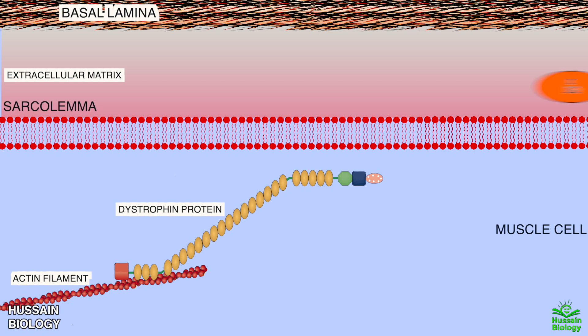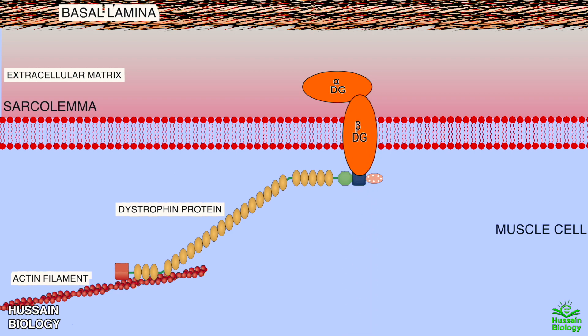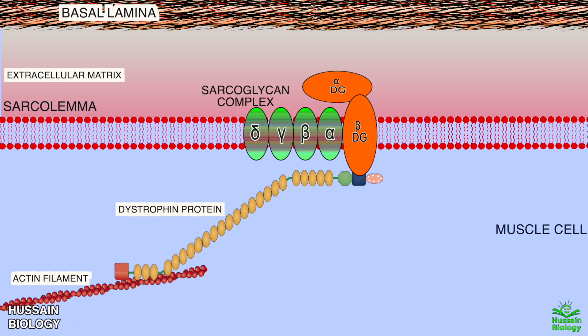At the sarcolemma we have different types of proteins assembling together. First we have alpha-dystroglycan on the outside of the sarcolemma, and then beta-dystroglycan which is a transmembrane protein. Beta-dystroglycan binds and interacts with the dystrophin protein, and these dystroglycan proteins act as a transmembrane linkage between the extracellular matrix and the cytoskeleton. We also have the sarcoglycan complex made up of four transmembrane proteins: alpha, beta, gamma, and delta.